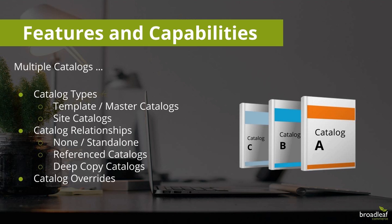The first feature and capability we want to pull out is multi-catalogs. With multi-catalogs, there are three key areas I want to touch on today: specifically the different types of catalogs we support, how those catalogs can be arranged in relationships, and once those relationships are in place, how data can be managed between those catalogs — including catalog overrides.